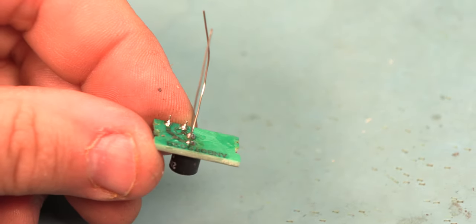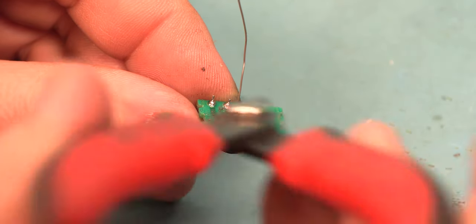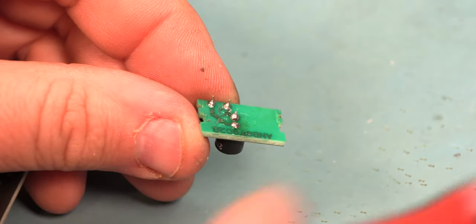And finally, in order to prevent shorting, we'll use some wire cutters and we'll trim the leads on the photocell.